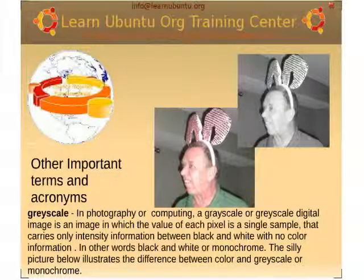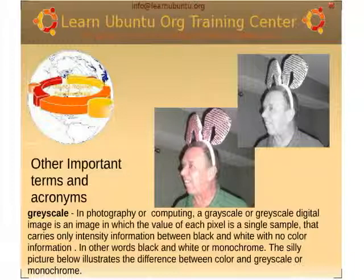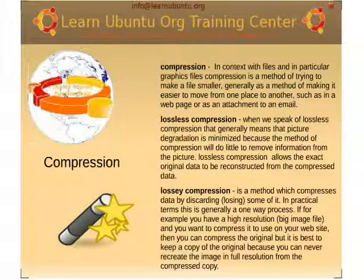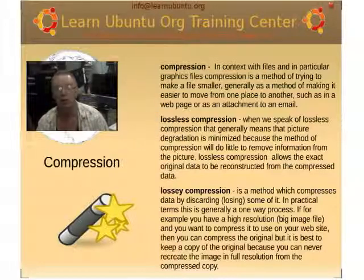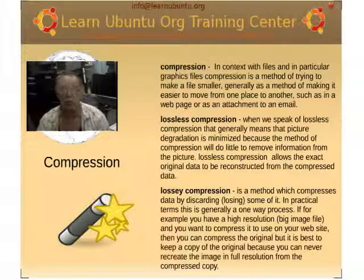Don't forget the difference between mono and black and white, color and black and white, and grayscale. In photography, grayscale means there's no color — as you can see, this picture has no color to begin with. That's me playing Easter Bunny. Compression: we need to understand compression if we're going to be dealing with images. Compression is all about how much do you compress versus how much do you lose. It's the same old story — it hasn't changed.